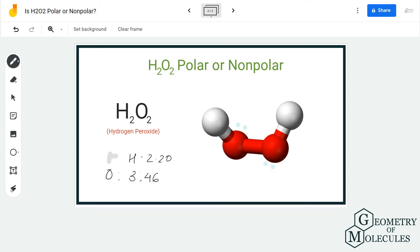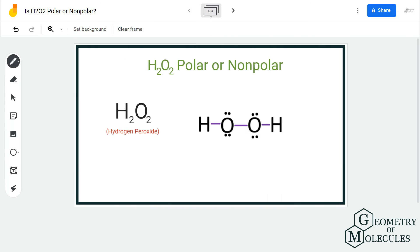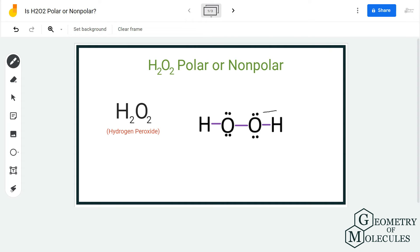As a result, oxygen will try to pull the shared electrons towards itself, and this will be true for both the oxygen atoms. As oxygen is more electronegative, the shared electrons are going to spend more time around the oxygen atom.